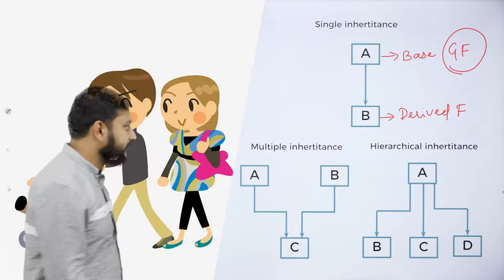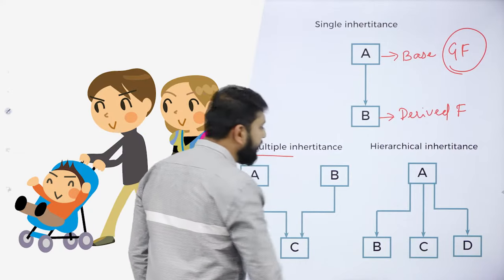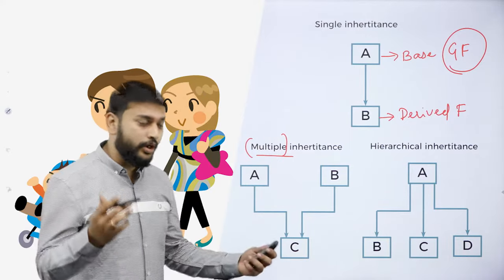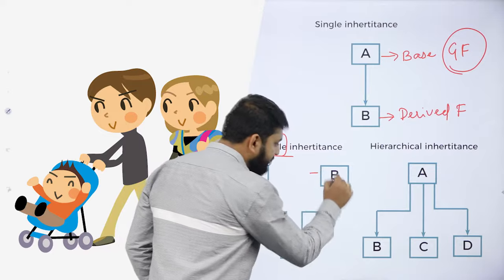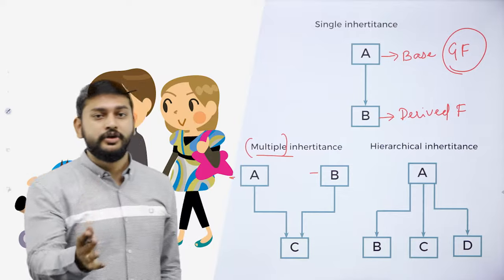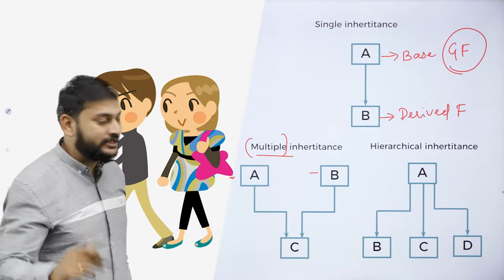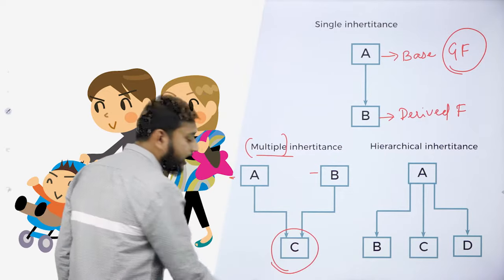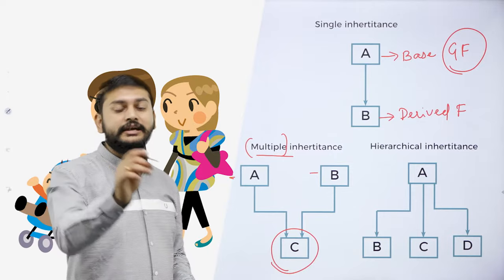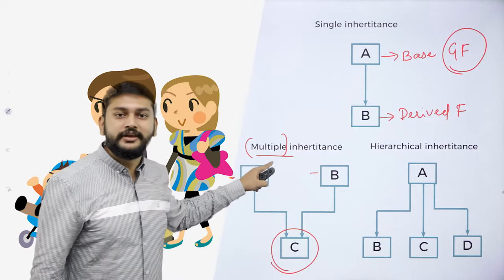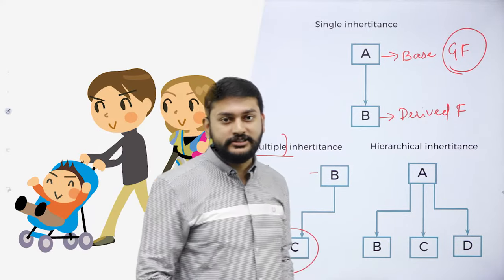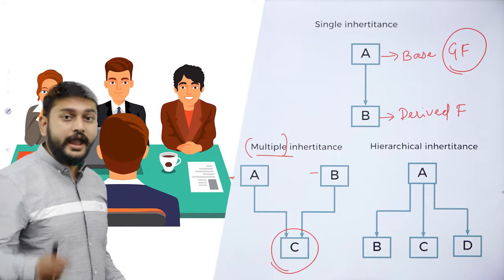The next type is multiple inheritance. If you have more than one base class and only one derived class, that is multiple inheritance.